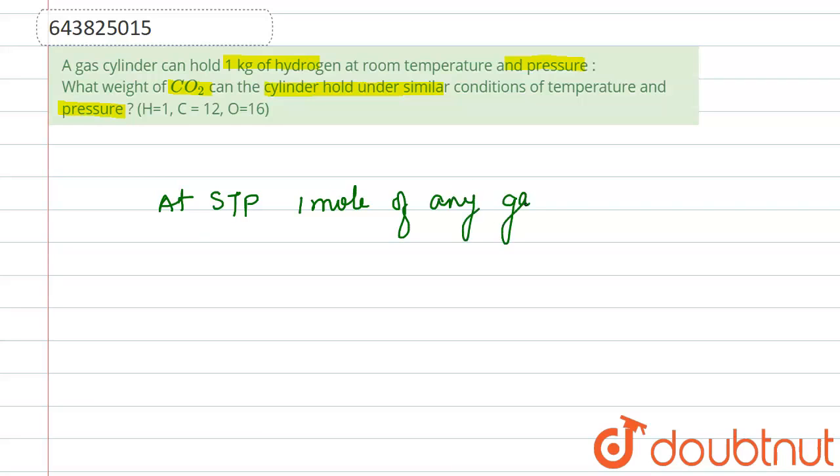So at STP, if we talk about 1000 mole of CO2 - it is saying 1 kg of H2 - so if we talk about at STP, let's say at STP, 1000 mole of CO2...